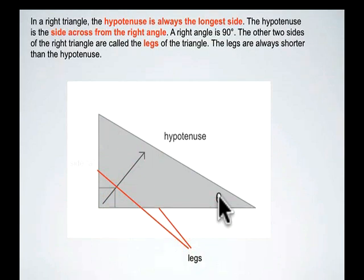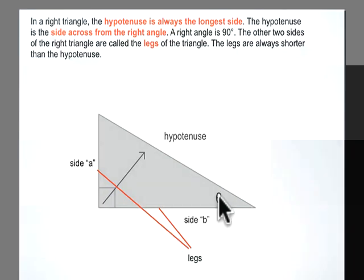Again, the hypotenuse is the longest side. Now the first leg we're going to call side A, the second leg we're going to call side B, and we're going to refer to our hypotenuse as side C.